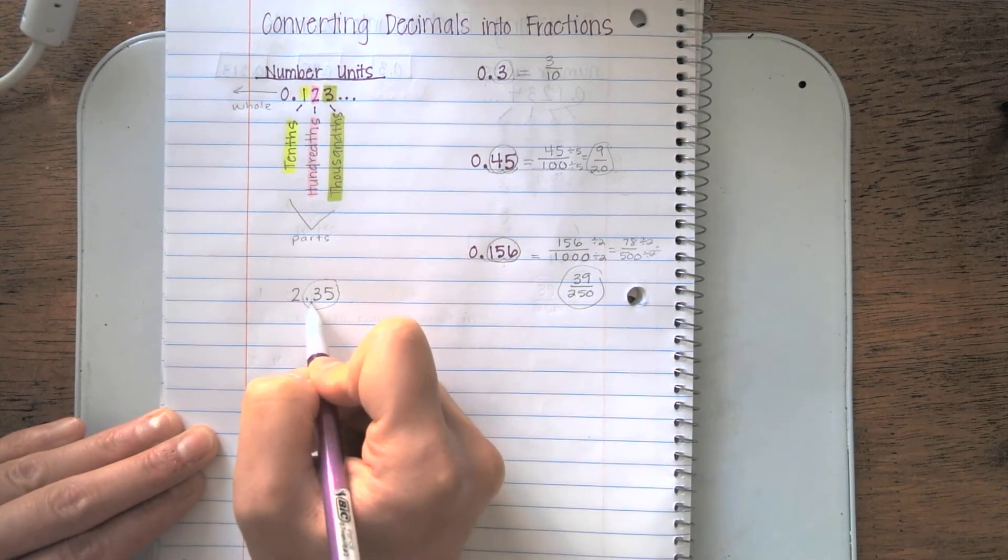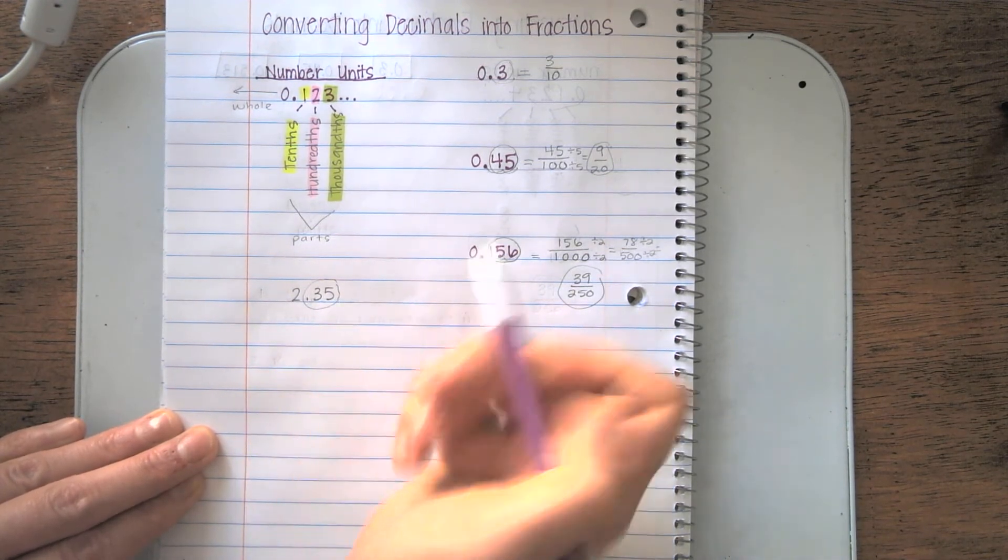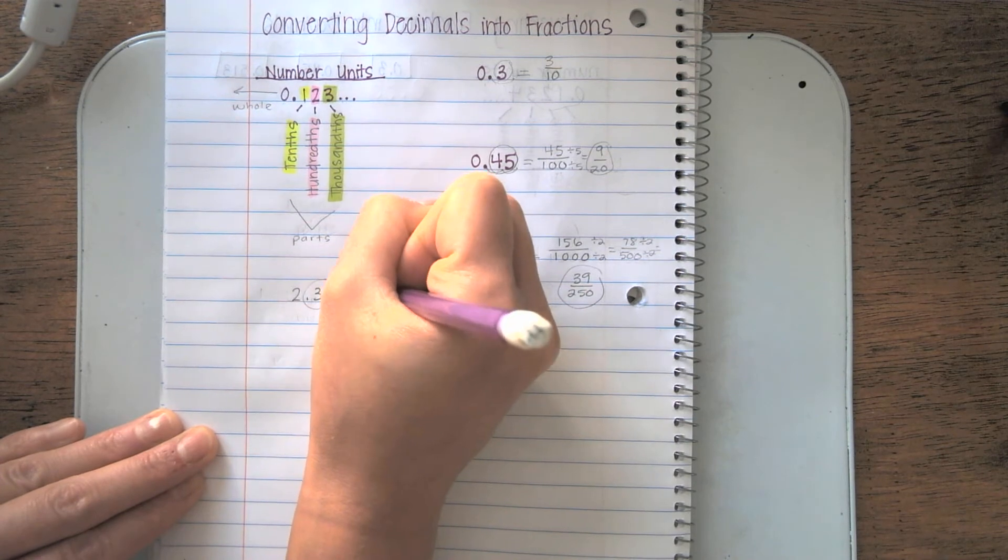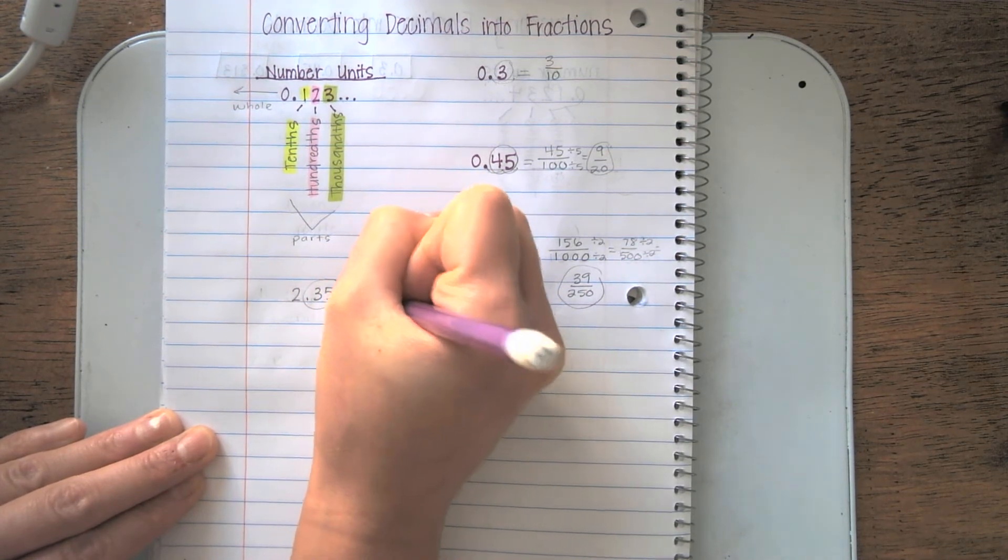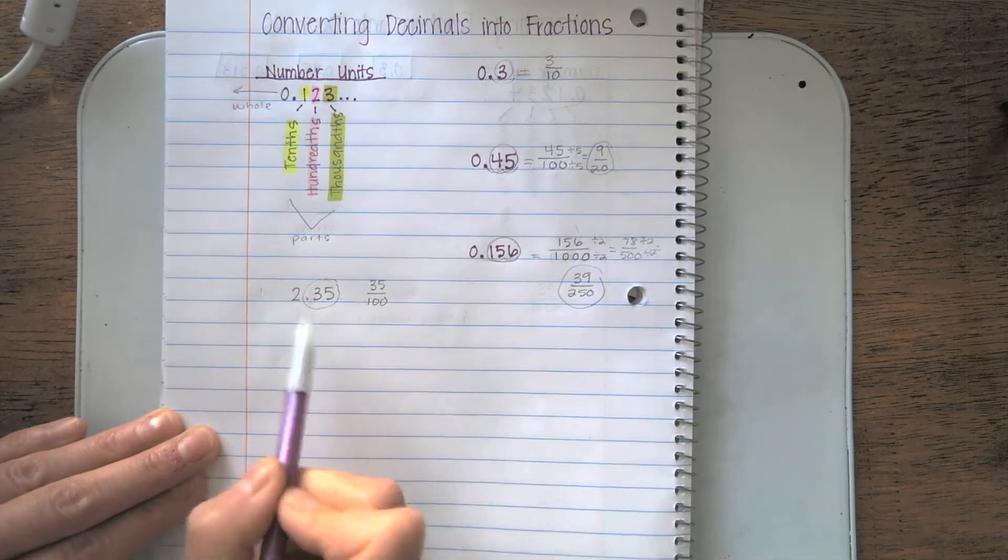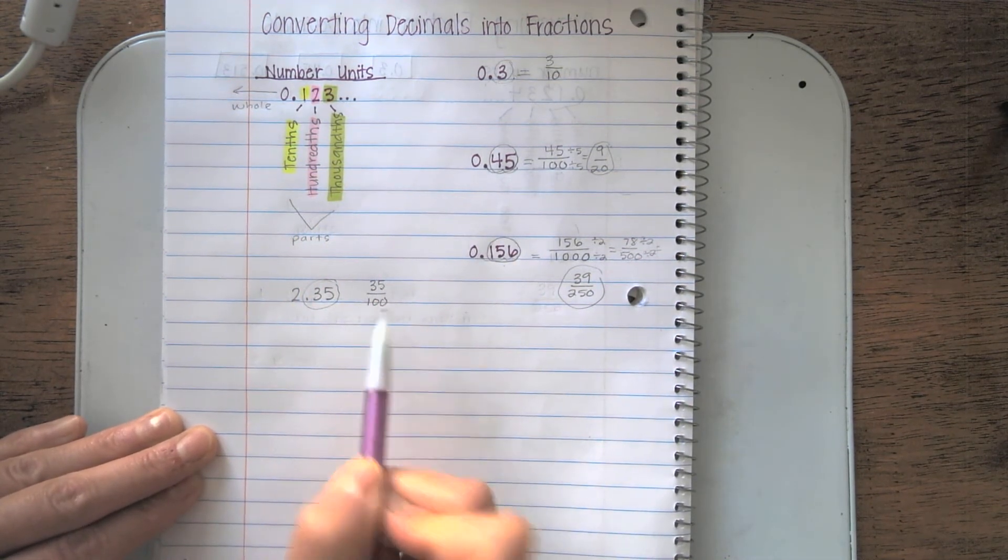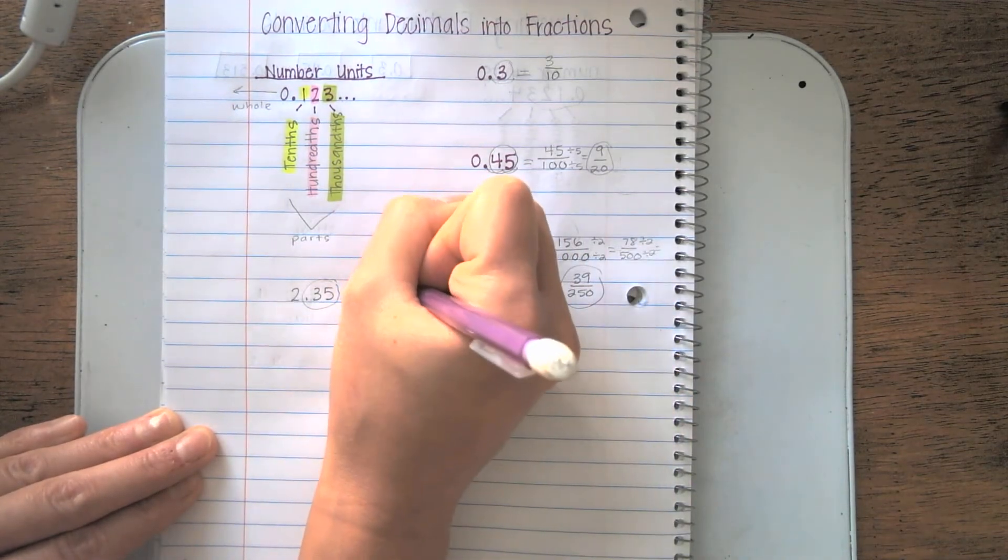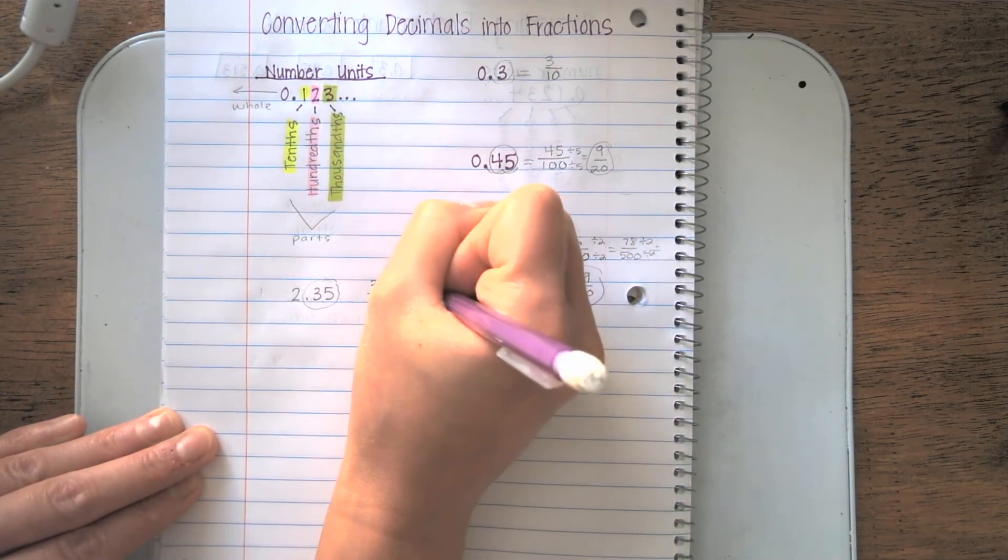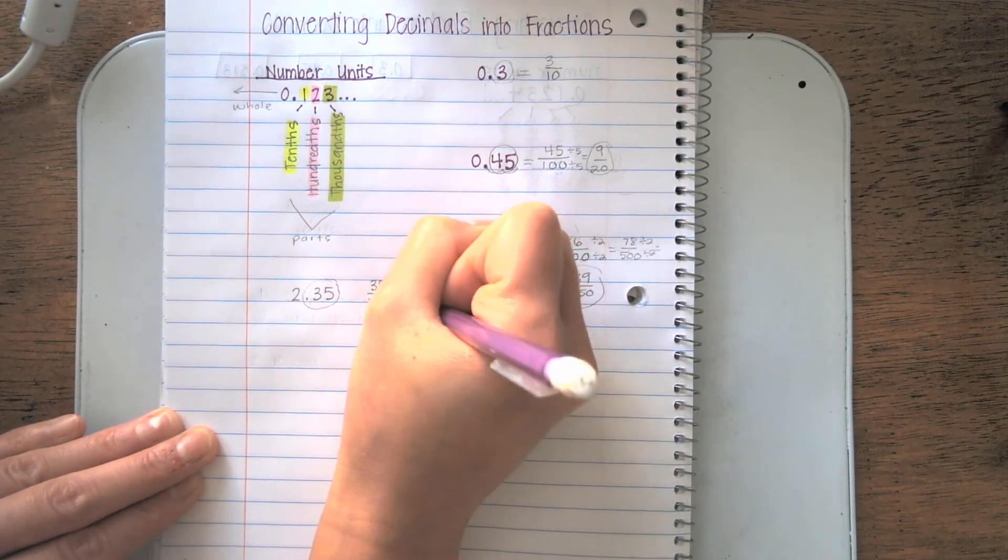So 35/100, because my numerator is always the digits after the decimal. I know both these numbers can be divided by 5. When I do that, 35 divided by 5 equals 7. And 100 divided by 5 is 20.